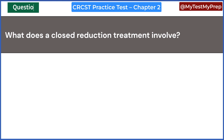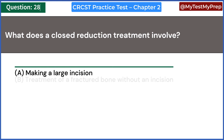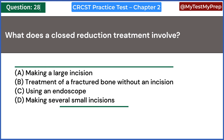What does a closed reduction treatment involve? A. Making a large incision. B. Treatment of a fractured bone without an incision. C. Using an endoscope. D. Making several small incisions. Answer: B. Treatment of a fractured bone without an incision.